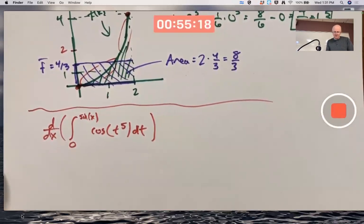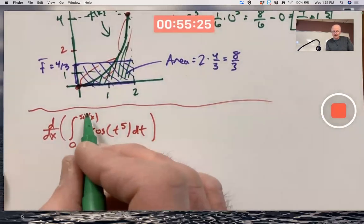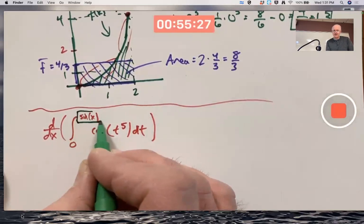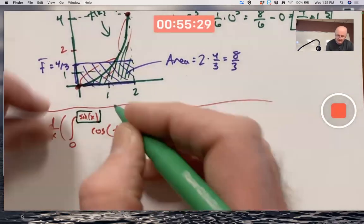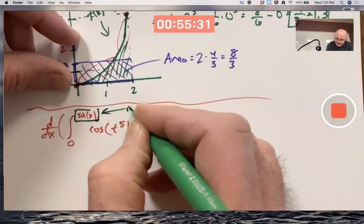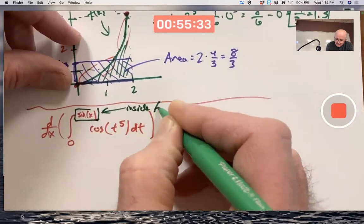Anybody think you see what I'm getting at there when I say that? Yep, that's true. I want to think of this, though, as just a composition of two functions. The inside function is going to be that upper limit of the integral. That's the inside function for the chain rule.